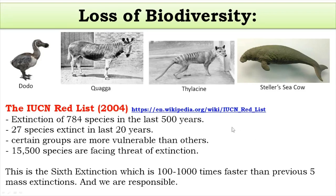Regarding the extinction of organisms in recent years, we have to remember the names of animals which have gone extinct from the natural environment: the Dodo bird from Mauritius, Quagga from Africa, Thylacine wolf from Australia, Stellar sea cow from Russia, and three subspecies of tigers which have gone extinct from their natural environment. These names are important from the examination point of view.